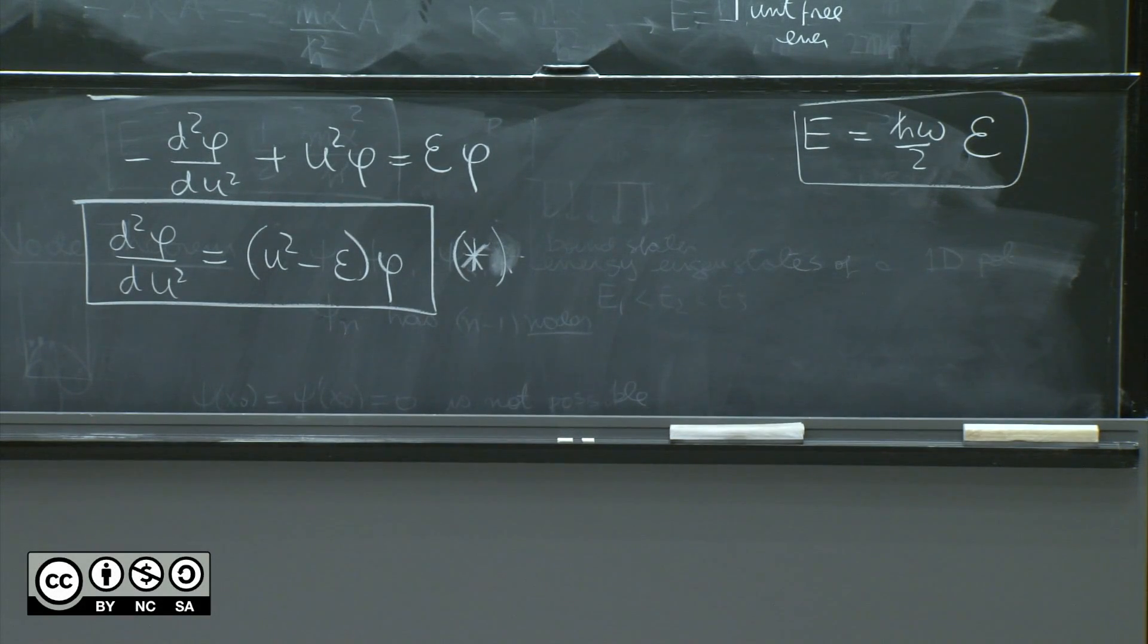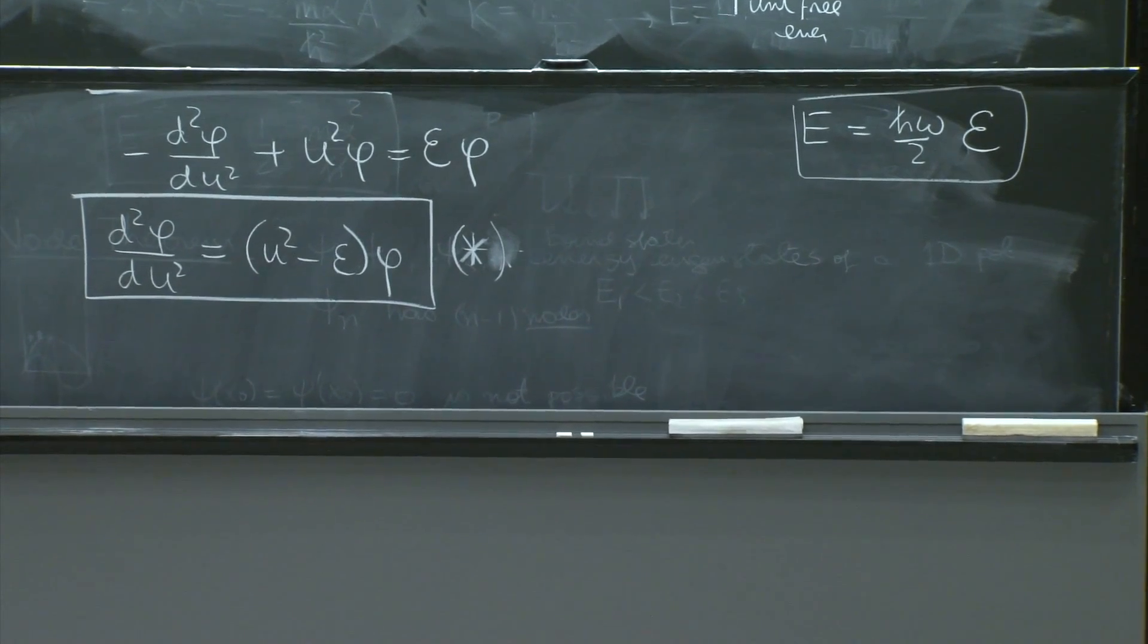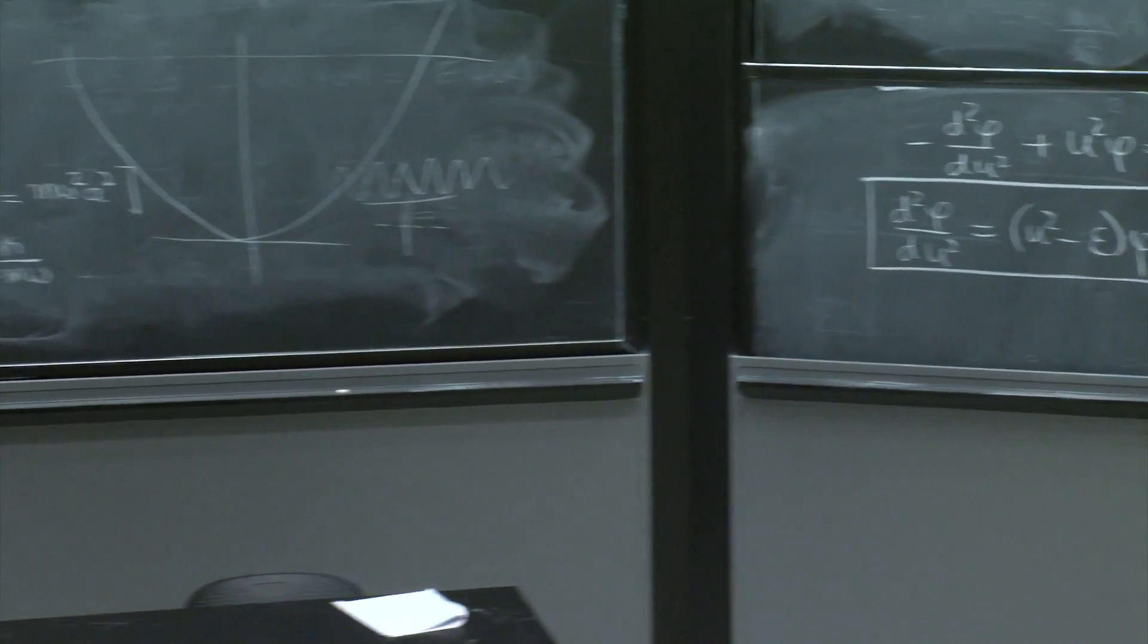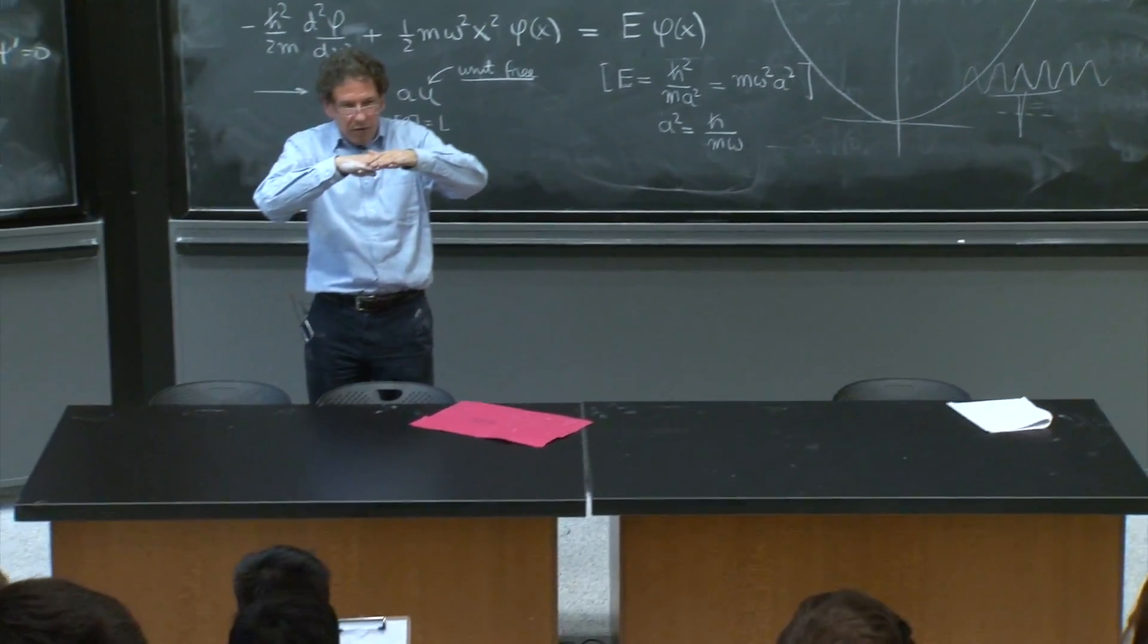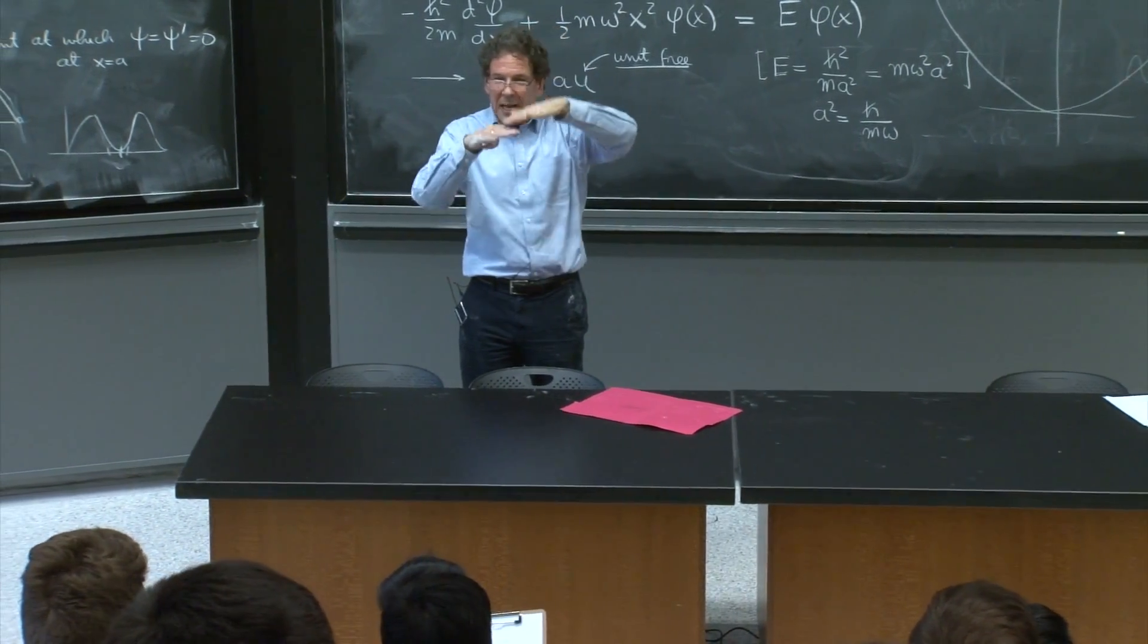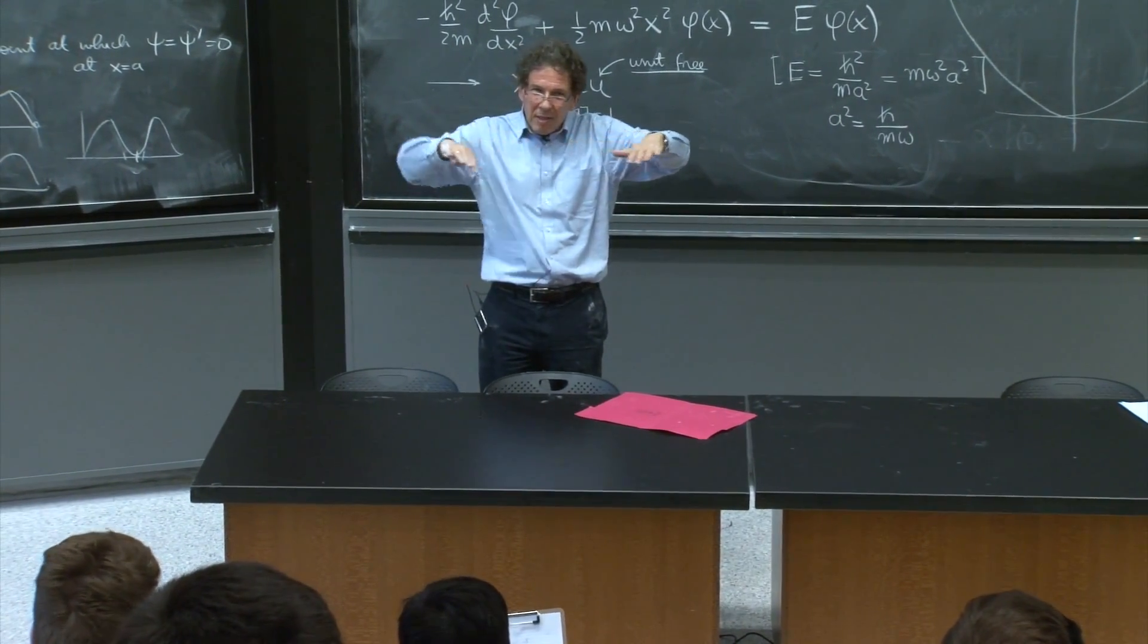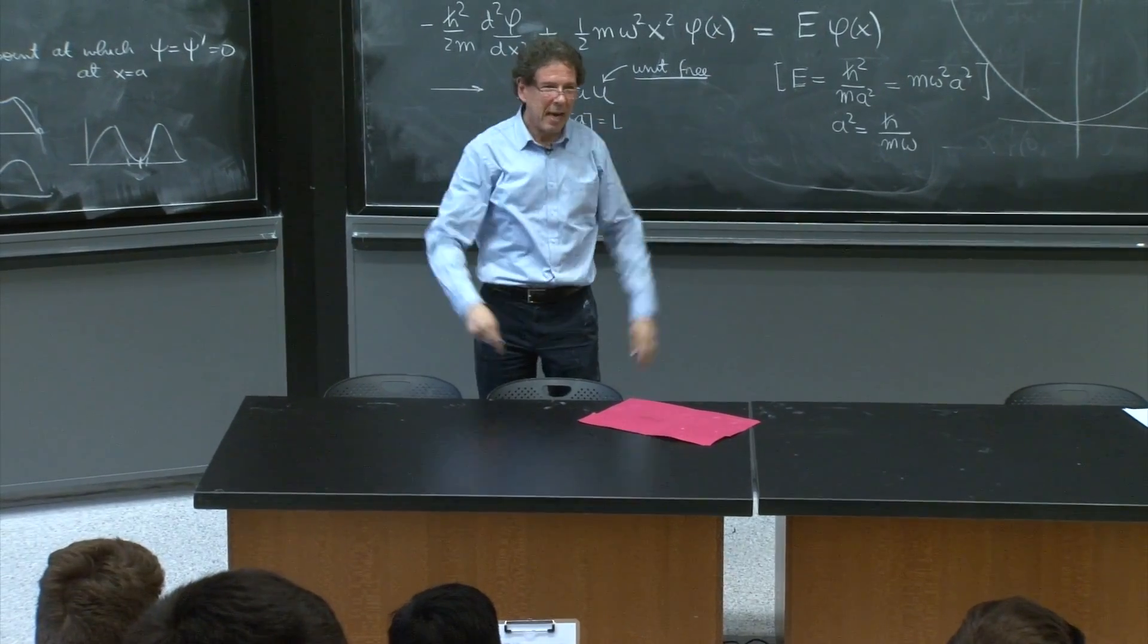Now, what should happen? Somehow, this equation probably has solutions for all values of the energy, but those solutions diverge and are not normalizable.